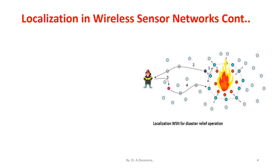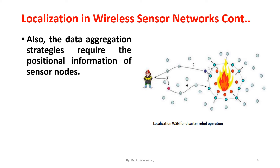Also, data aggregation strategies require the positional information of sensor nodes. The collected data from various sensors would be useless if accurate information of the location particulars of the sensor nodes is not available.